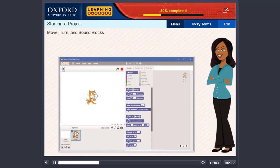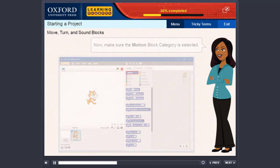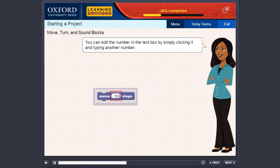Move, turn, and sound blocks: To make the sprite move or turn, first select the Scripts tab. Now, make sure the Motion block category is selected. Drag the block from the block palette onto the script's area. You can edit the number in the text box by simply clicking it and typing another number.